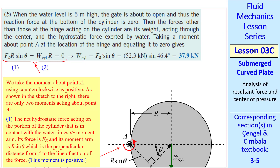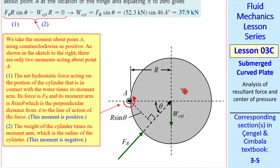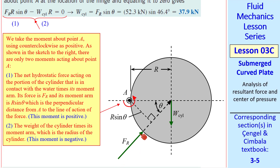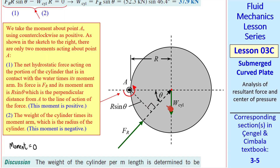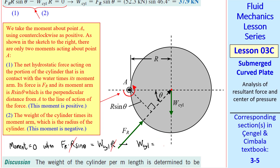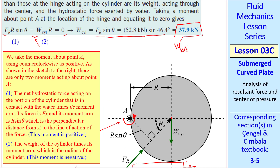For Part B, we need to calculate the weight of the cylinder such that the gate will open when the water is 5 meters high. The cylinder has some weight, and the only other force acting on it is the resultant force Fr, which passes through the center of the cylinder. When will the cylinder start to tilt up? Taking the net moment about hinge A: when the moment due to Fr — which is Fr times r·sin θ — equals the moment due to the cylinder weight W times r, the net moment is zero. The r's cancel, so W_cylinder = Fr·sin θ. Plugging in the numbers gives the weight of the cylinder.